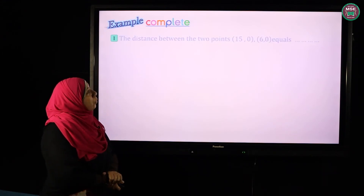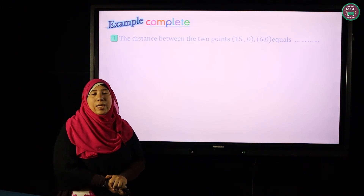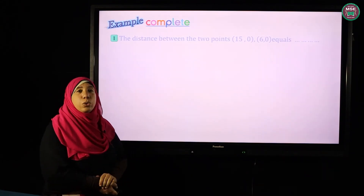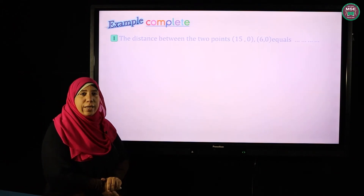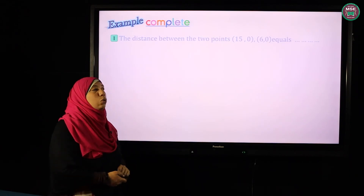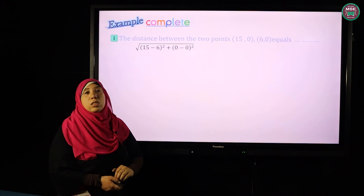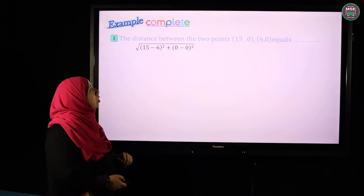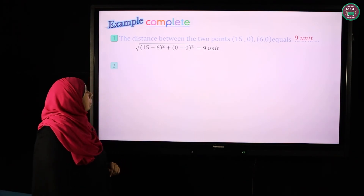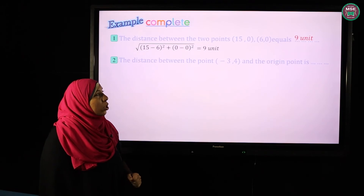For example, number one: find the distance between the two points (15, 0) and (6, 0). For any two distinct points, we use the rule: square root of (x1 minus x2) squared plus (y1 minus y2) squared. With x1 = 15 and x2 = 6: square root of (15 minus 6) squared plus (0 minus 0) squared equals 9 units.